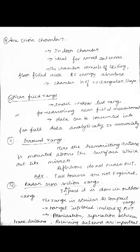The anechoic chamber is an indoor chamber ideally suitable for very small antennas. The chamber consists of a ceiling and floor filled with RF energy absorbers. The purpose of the absorbers is to prevent RF energy from interfering during antenna parameter measurement, which could result in wrong values. The chamber is rectangular in shape to accommodate antennas well inside.